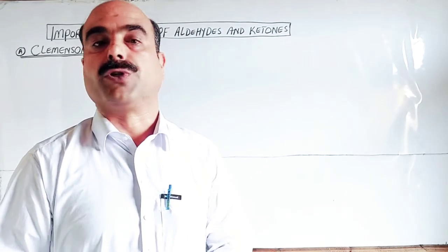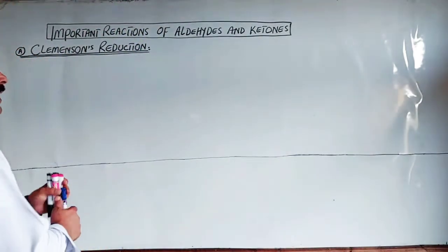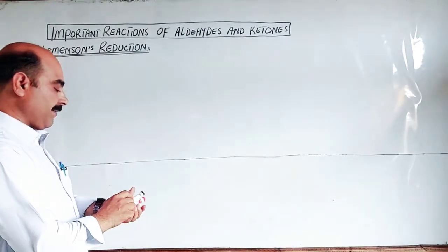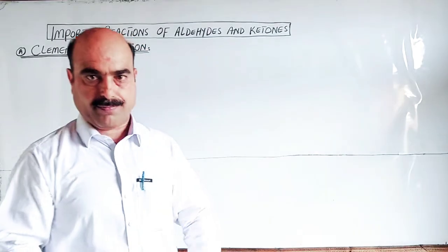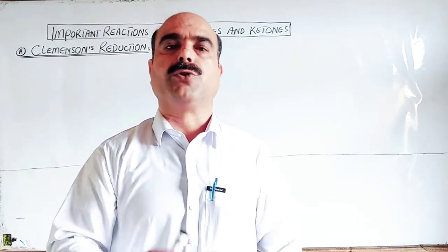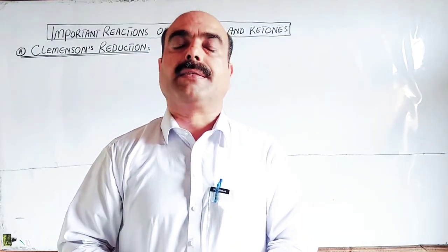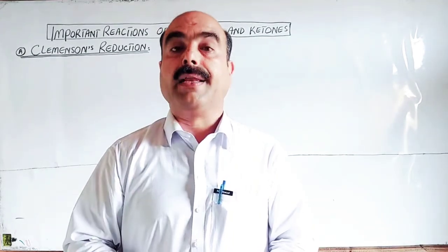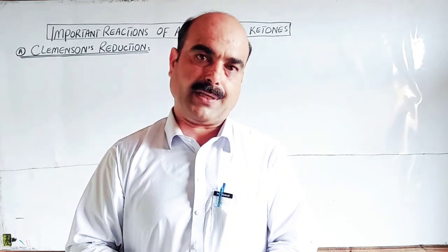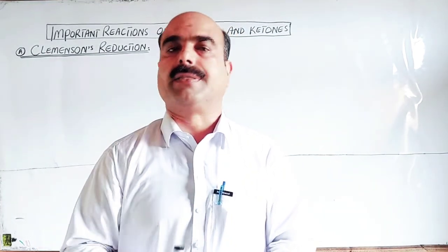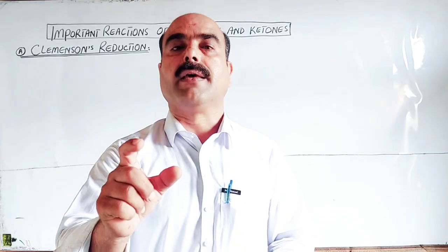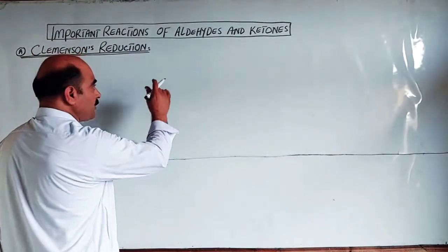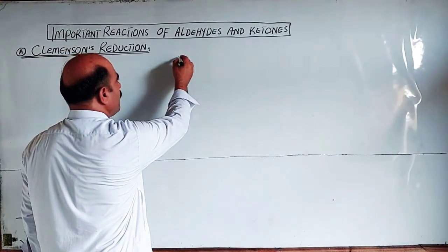The reagents used are clearly reducing agents. In the Clemmensen reduction, zinc amalgam (zinc with mercury) is used. The zinc and mercury act as a catalyst on the amalgam surface for the aldehydes and ketones. This is a catalyst, and the main reducing agent is HCl used alongside it. So the aldehydes and ketones have a carbonyl group present.